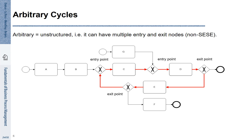They have several entry and several exit points. You see such an example here — this loop has two entry points and two exit points. Sometimes it is possible to rework the loop so that it becomes a single entry and single exit. If that's not the case, we cannot represent it as a subprocess.